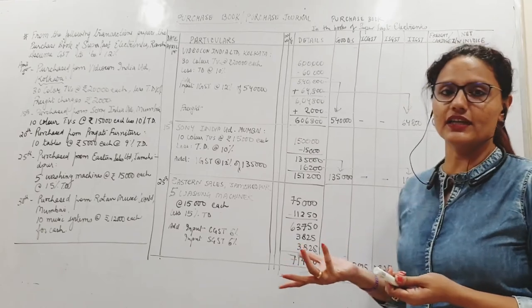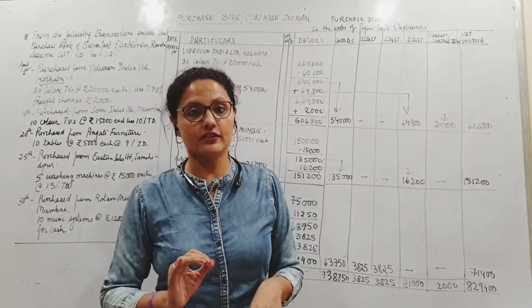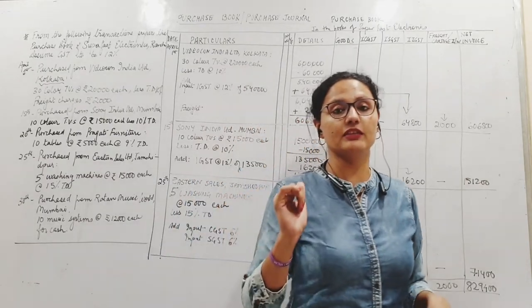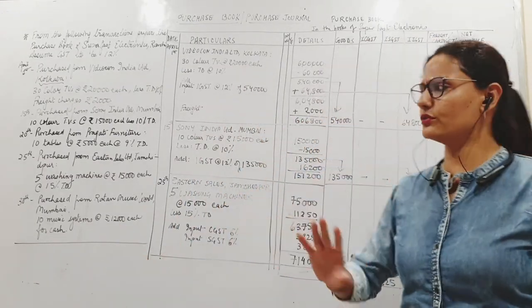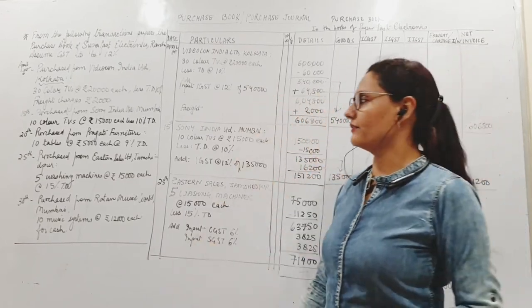Next one is on 20th. Purchase from Prajapati Furniture, 10 tables at 5,000 each, 10 percent trade discount. Why did I not write it here? It is very much a credit transaction, but it is purchase of furniture, not goods. So we will not put it here. Electronics, we will not put it here. This is a clear indication that this is not goods. This must have been used for office use. This will go to journal proper.